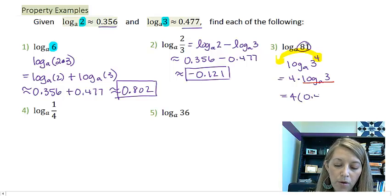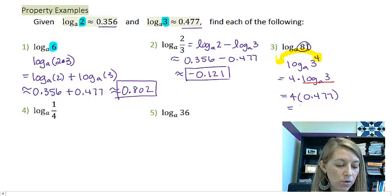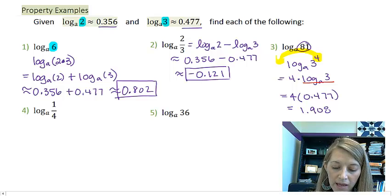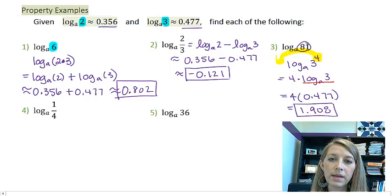Well, now I can make the substitution for log base A of 3. And so this is 4 times 0.477. So all I have to do is that multiplication then. So 4 times 0.477 is 1.908. And so that gives me an answer to example 3.